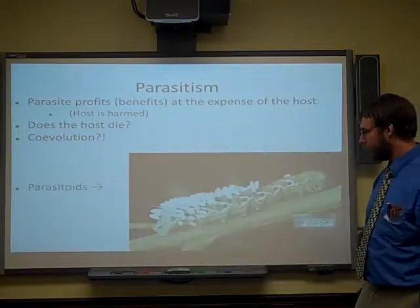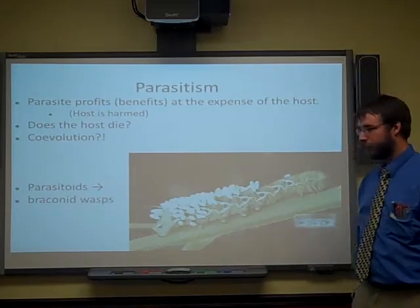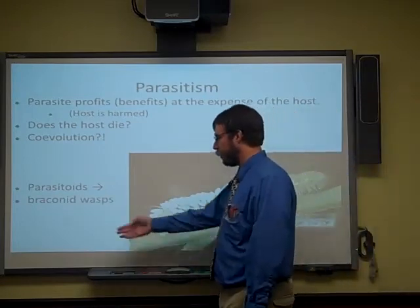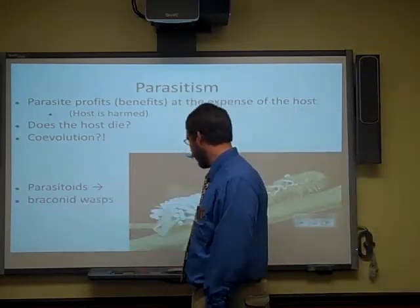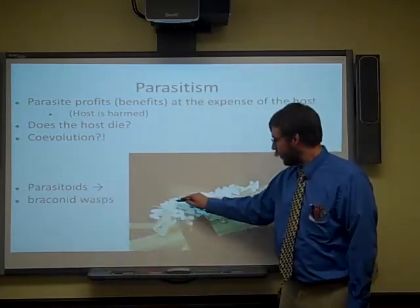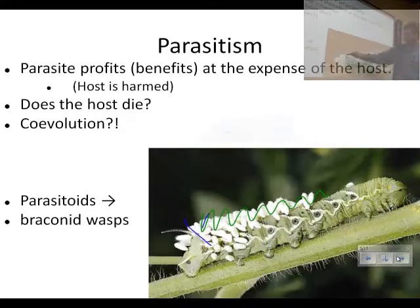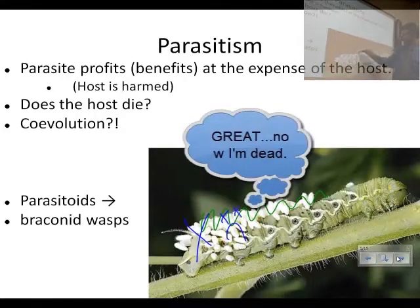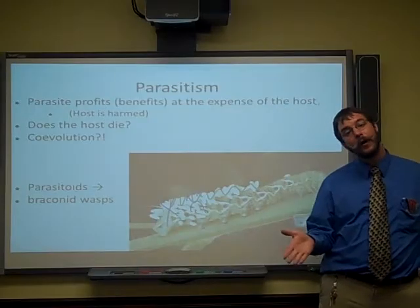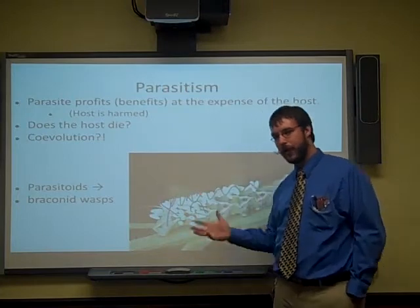These are parasitoid wasps — a species called Braconid wasps. They live all over the surface of a caterpillar and lay their eggs inside it. What actually happens is the caterpillar dies. And because the host dies — not just harmed, not just at a disadvantage, but actually dies — it is not parasitism. It's parasitoidism.